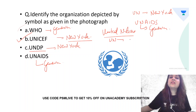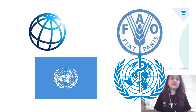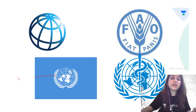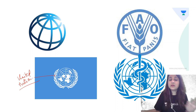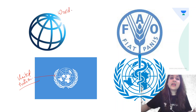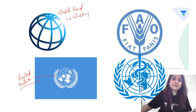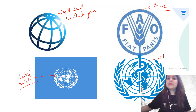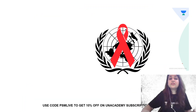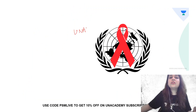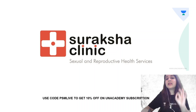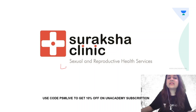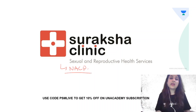Just for your revision: the United Nations logo — also beginning with UN — has its headquarter in New York. The World Bank's headquarter is in Washington. FAO, the Food and Agricultural Organization, is in Rome. WHO's headquarter is in Geneva. UNAIDS, although it begins with UN, has its headquarter in Geneva — remember that exception. The logo with the red dot in between is Saraksha Clinic, established by the National AIDS Control Program to promote reproductive and sexual health services.